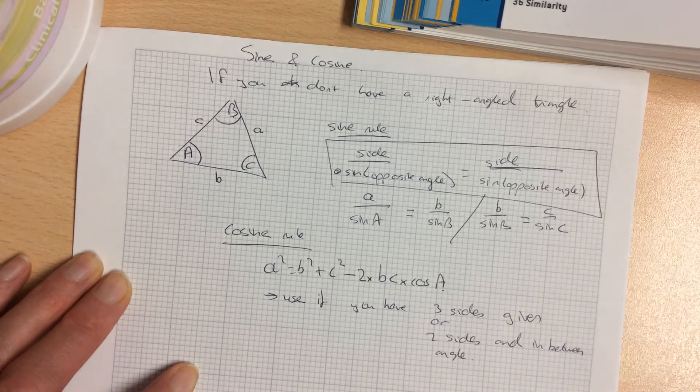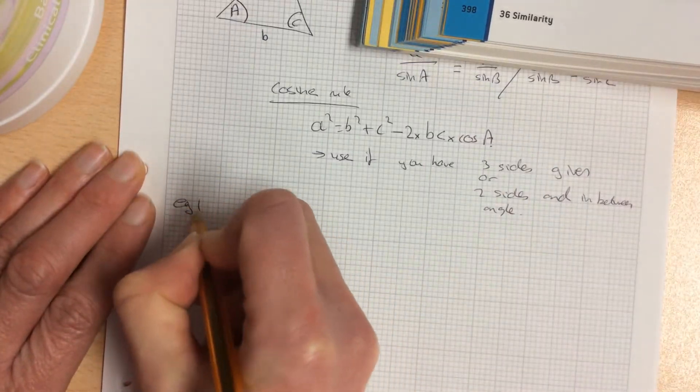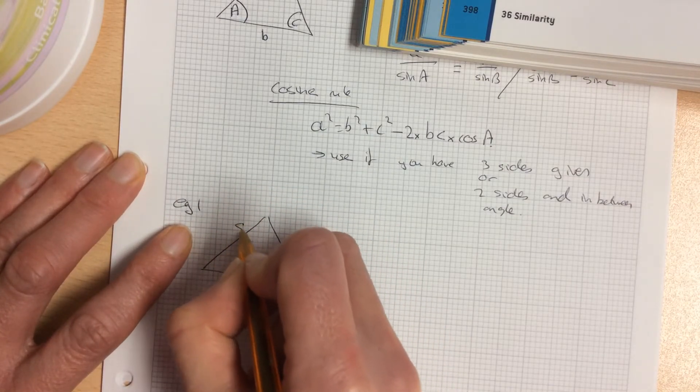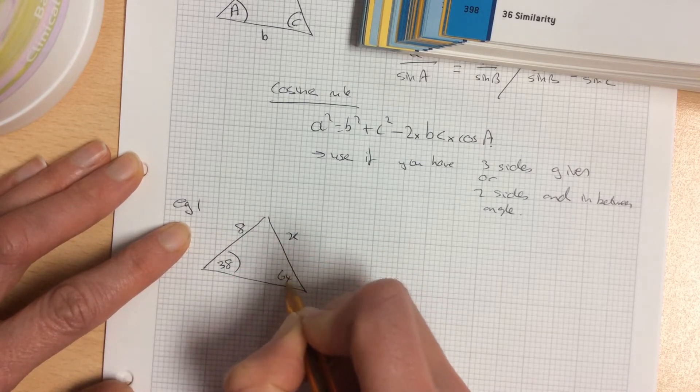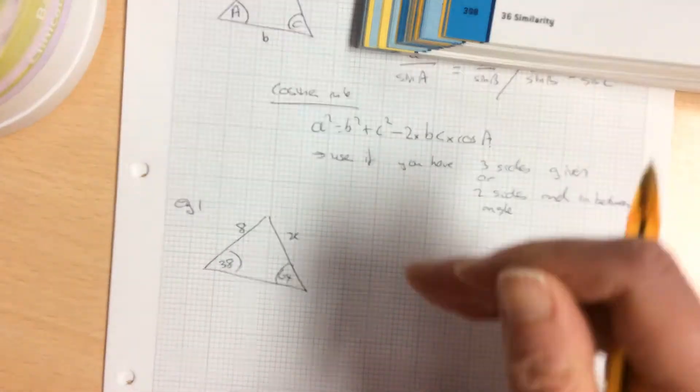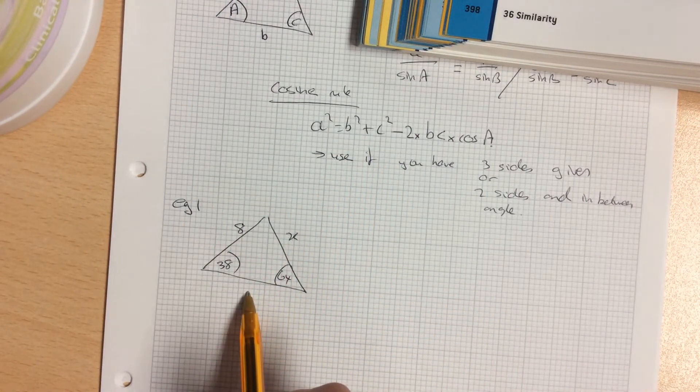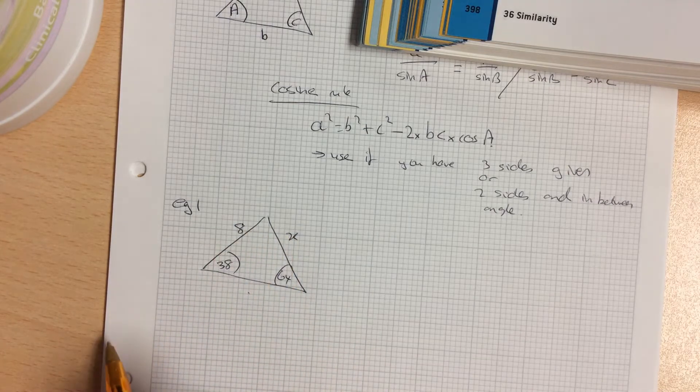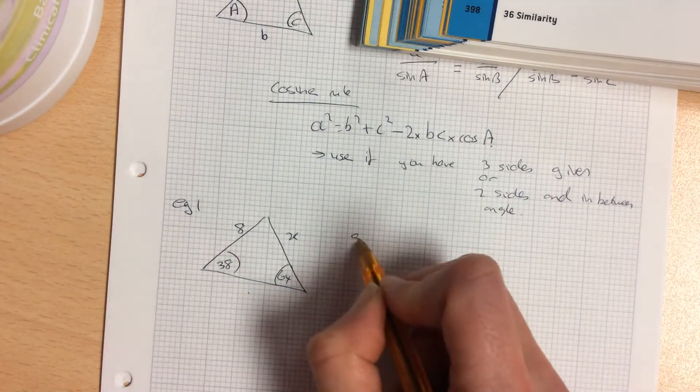We're going to do a few examples. Example one: if I have this triangle with sides 8, X, and angles 38 and 64. You can see we don't have a right angle. Check for cosine rule: I don't have three sides and I don't have two sides and the in-between angle. So I'm going to use the sine rule.